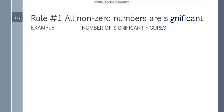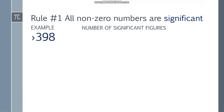Rule number one: all non-zero numbers are significant. So if it's not zero, it's a significant figure. For example, 398 — that will be 1, 2, 3. Number of significant figures: 3.